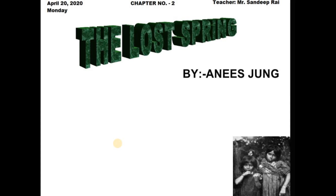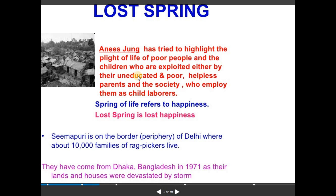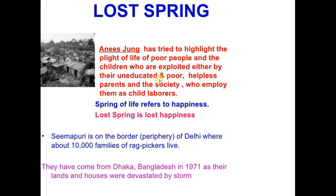This chapter, 'Lost Spring,' talks about the poverty which is prevalent in different societies across the entire country. She has tried to highlight the plight of poor people and children who are exploited by their uneducated, poor, and helpless parents, and by a society that employs them as child laborers. This chapter has a story about the poor rag pickers of Seemapuri.